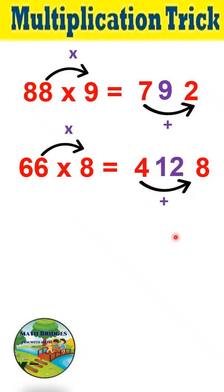4 plus 8 is 12. It's a two-digit number in the center, so what you do is add this 1 to the 4. So 1 plus 4 is 5, and 2 will be as it is. Therefore, 528 is the product. Now you can give a try for this one: